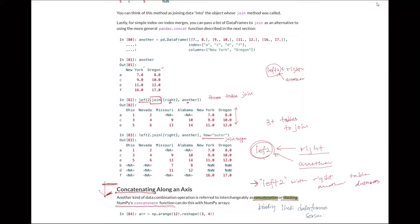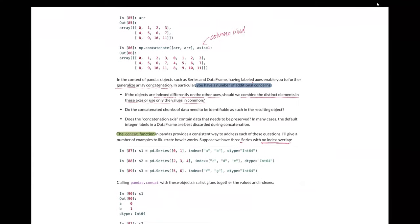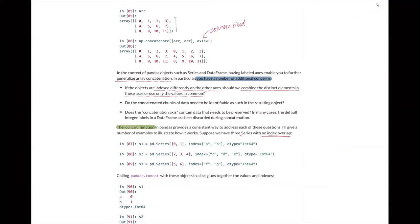In the NumPy package, there is a function called concatenate. We can try the concatenate function using NumPy arrays. As you can see, with this array, using the concatenate option with axis=1 means column binding — like cbind in R — so arr and arr get linked together based on the column.